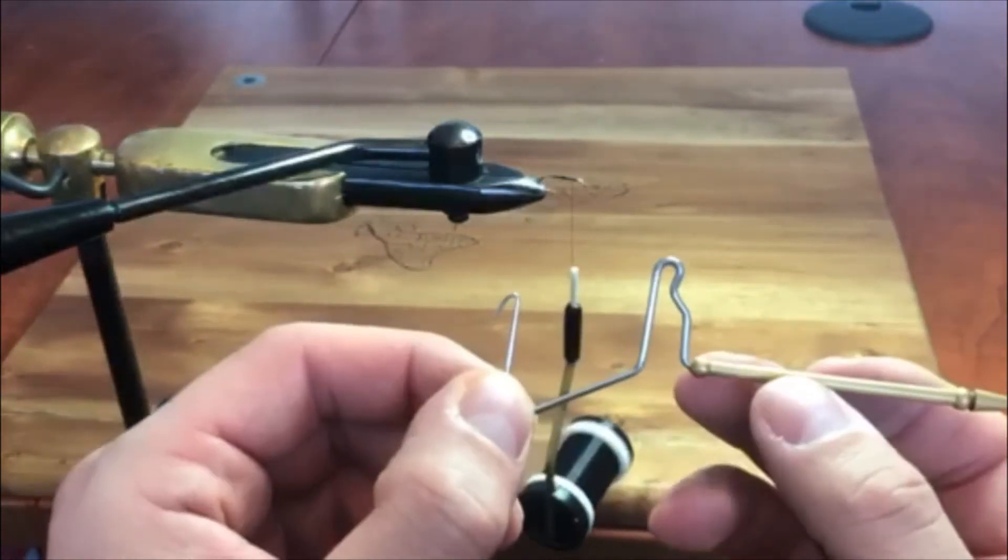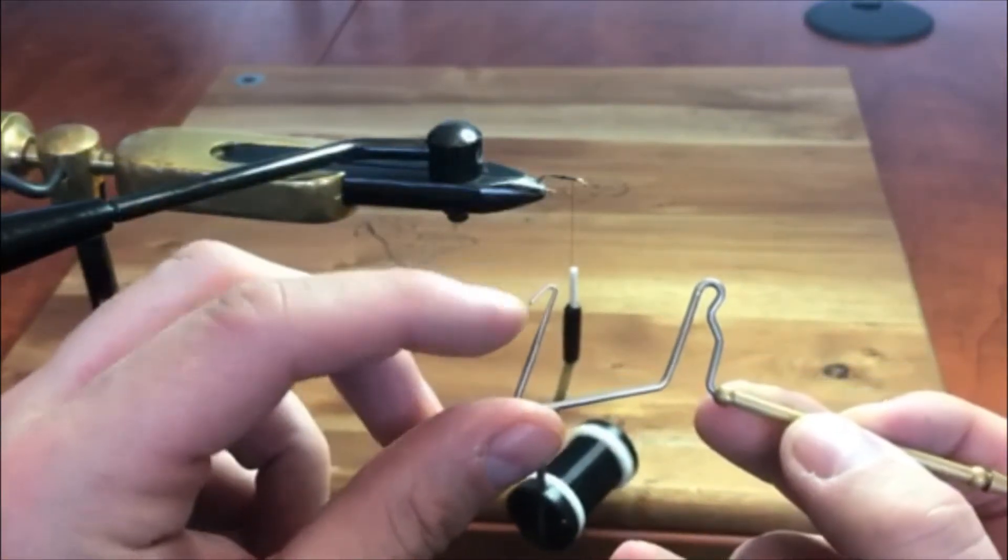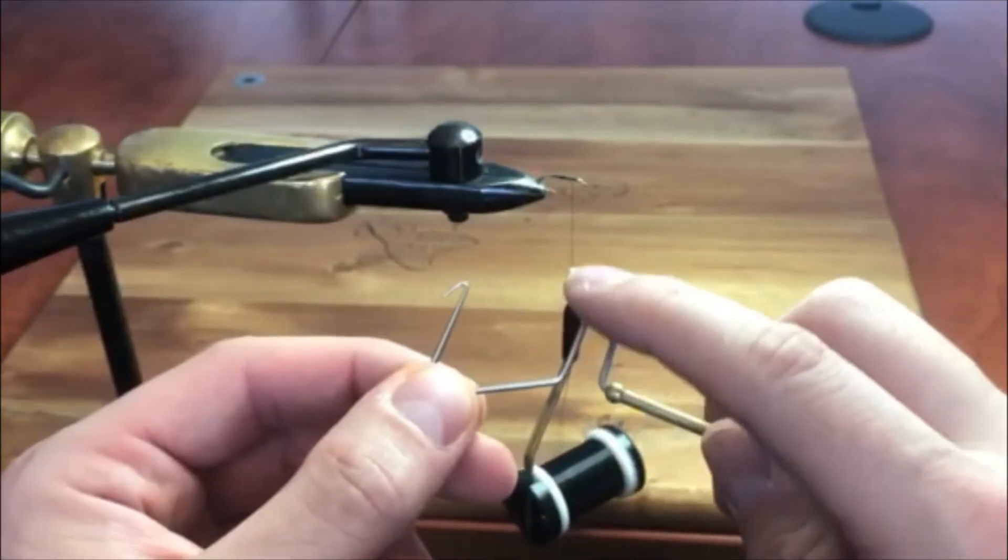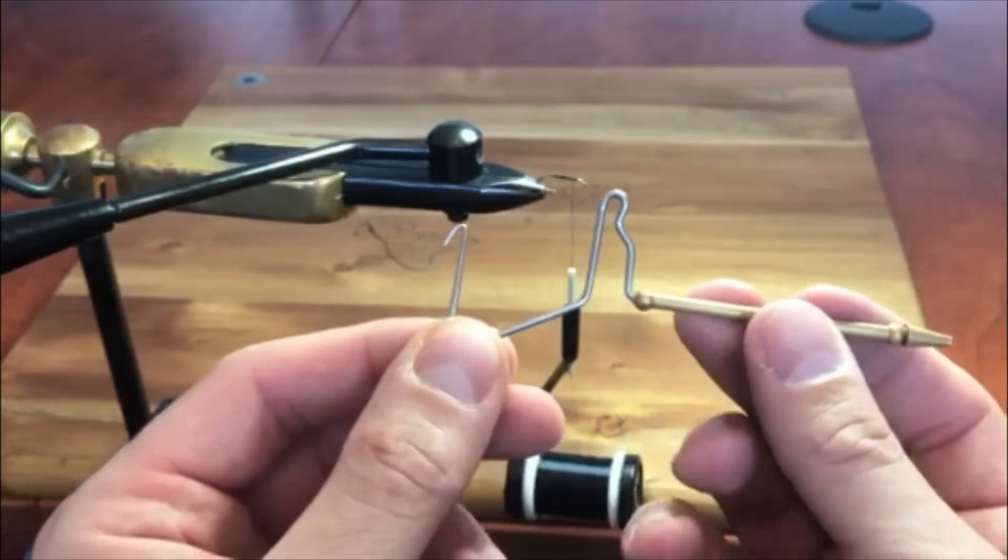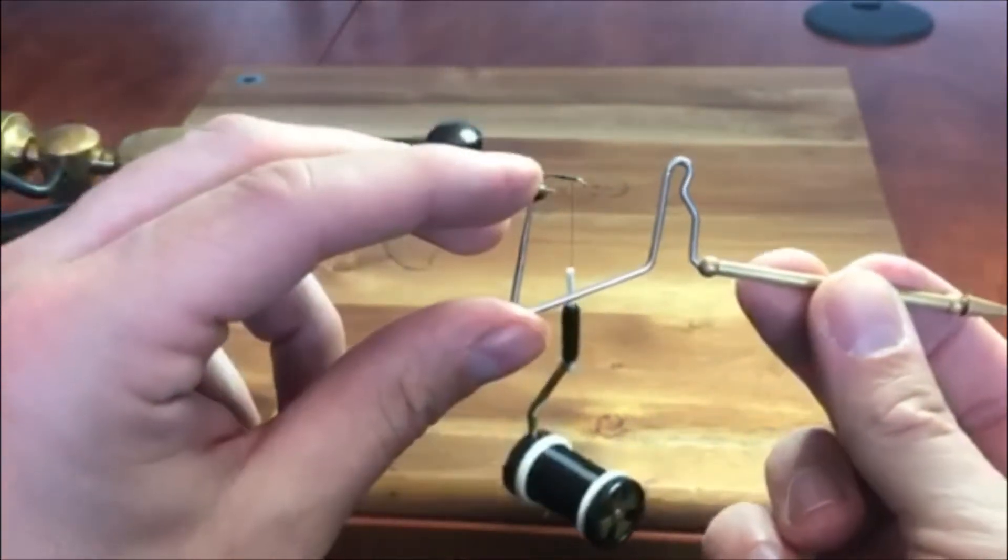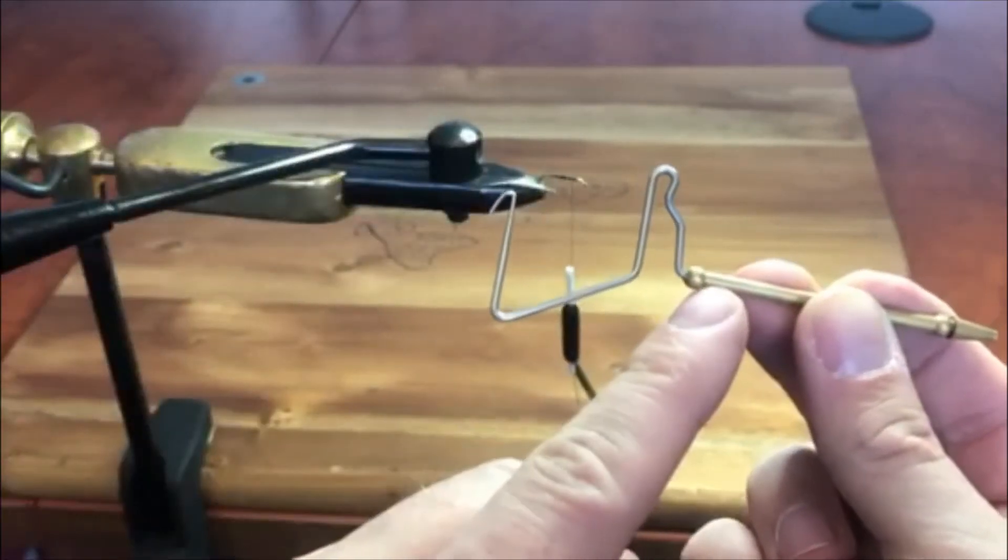Now the whip finish tool itself is broken into a few key parts. You have the hook at the front followed by the bar with an indentation at the back. The handle itself is stationary while the front part will swivel on this ball point here.